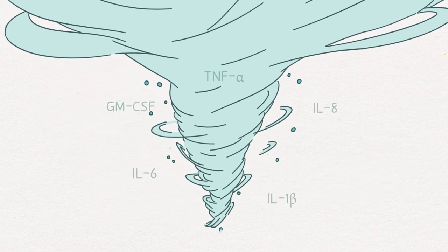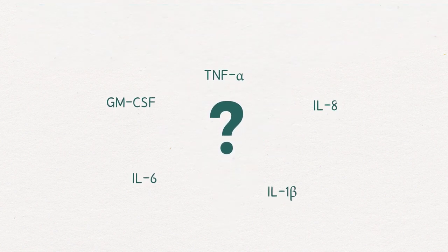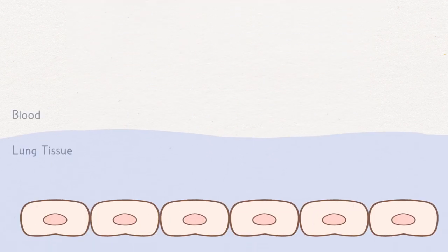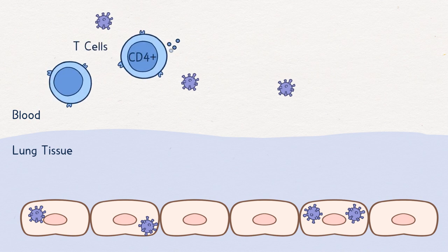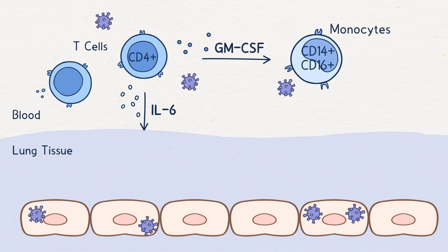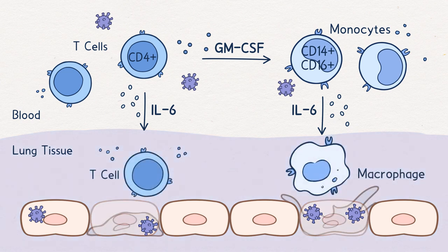Inflammatory storm involves many cytokines. Which one is the key to trigger the inflammatory storm in severe COVID-19 is still unknown. After a comprehensive analysis of the blood from 33 patients with severe or critical COVID-19, the research team from Professor Heiming Wei at the University of Science and Technology of China, USTC, identified that after coronavirus infection, pathogenic T cells were rapidly activated to produce granulocyte macrophage colony stimulating factor, GM-CSF, and interleukin-6, IL-6. GM-CSF further induced CD14-positive and CD16-positive inflammatory monocytes, which produced more IL-6 and other inflammatory cytokines, leading to inflammatory storms.